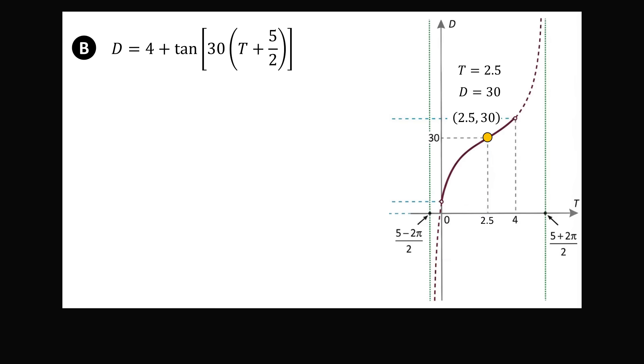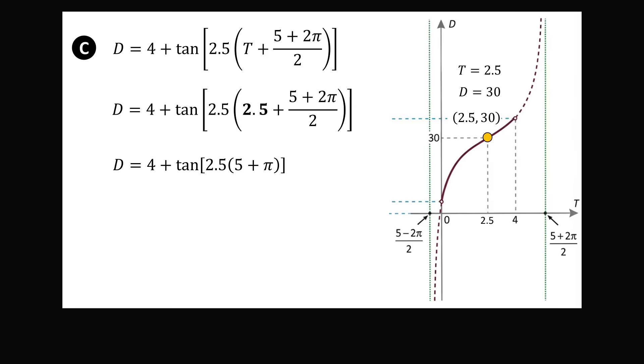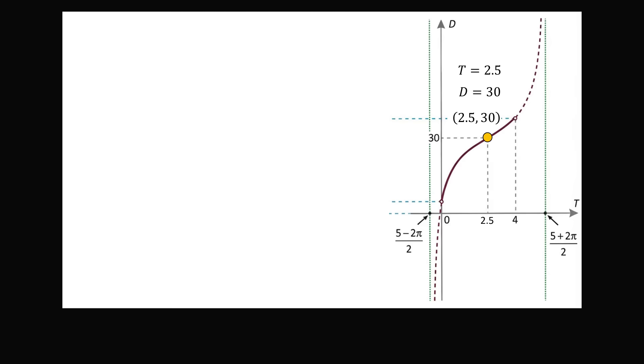So, let's proceed to option B. We will substitute T is equal to 2.5. 2.5 plus 5 over 2 will be equal to 5. 5 times 30 will give us 150. Tangent of 150 is going to be some irrational number. And so, when we add it to 2.5, we're not going to get an integer result. So, this is definitely not equal to 30. I'm explaining how you can solve this without a calculator because as I understand it, students are not allowed to use calculator on this test. So, option B cannot be the correct answer. So, we now go to option C. We substitute T is equal to 2.5. We will then simplify. Now, we have tangent of 2.5 times 5 plus π. So, this entire thing is not going to be a multiple of π. It's going to be some irrational value. So, this is not going to simplify to be equal to 30. So, option C also is not going to work.